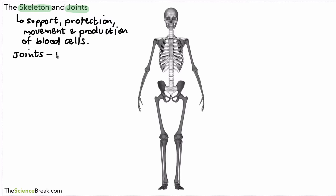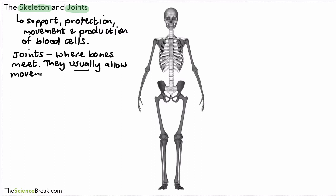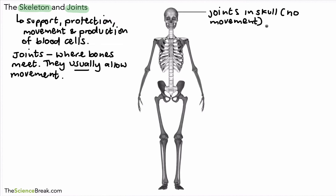We're going to look at their structure a little bit as well. Joints are where bones meet each other. They usually allow movement of bones or movement of limbs such as your arms and legs. They don't always allow movement though — for example, the skull is made of several different bones that are joined together, and the joints in the skull don't allow movement. However, if you look at something like your elbow or your shoulder, these are built for movement — so these joints allow movement.